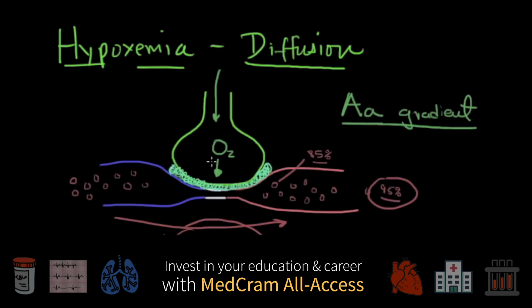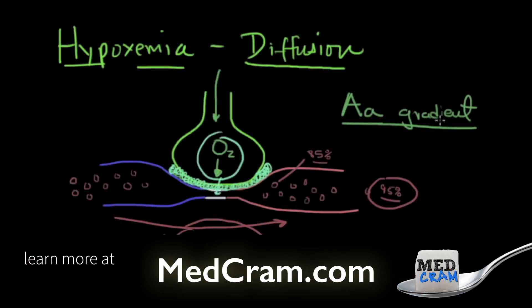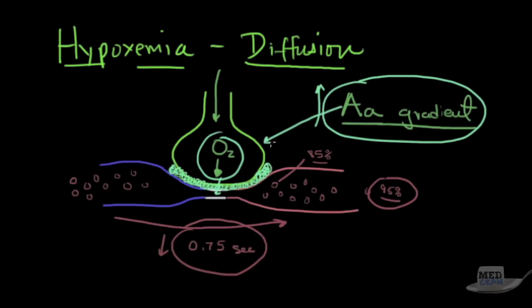There you'll see an increased A-a gradient, capital A standing for alveolus, lowercase a standing for artery. So that increased A-a gradient you'll see, and we'll show you how to calculate that in a bit.